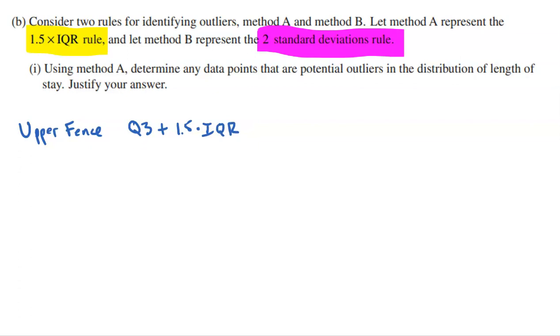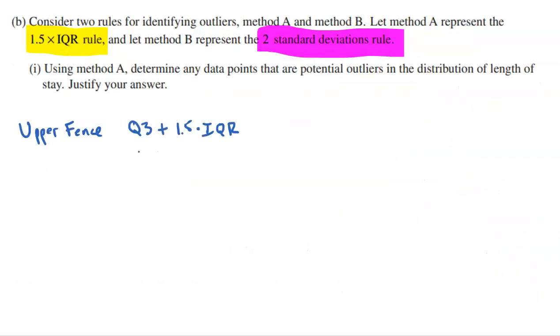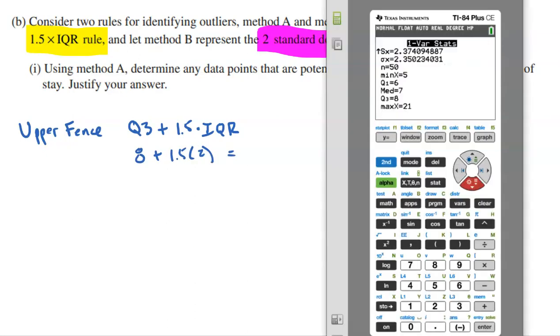To find the upper fence, you take Q3, add 1.5 times the IQR, which is why it's called the 1.5 times the IQR rule. For me in my data, the IQR, I got to figure out, which only takes a second. The IQR is simply the difference between Q3 and Q1. So that's eight minus six. The IQR is two. So to find that upper fence, I'm going to take Q3, which is eight, and add 1.5 times my IQR, which is two.